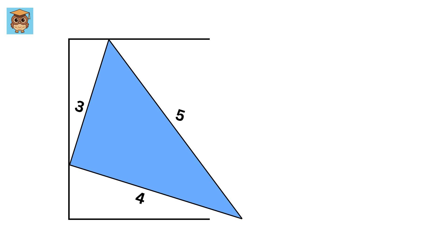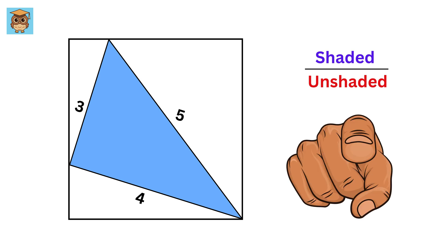We put a square around this triangle like this, such that this vertex of the square coincides with the vertex of this triangle like this. Our job is to find the ratio of the area of the blue shaded region to the area of the unshaded or the white region. So, can you solve it?